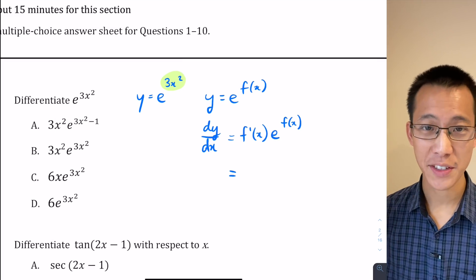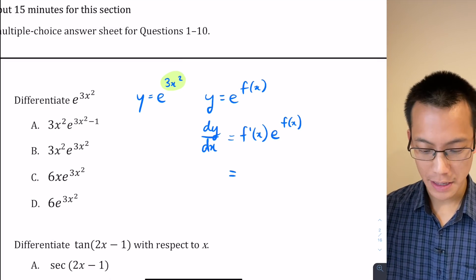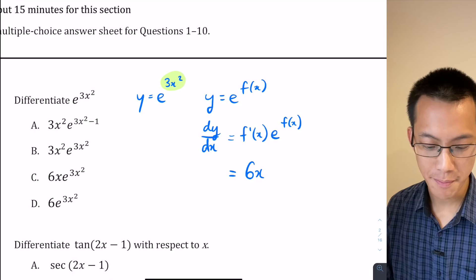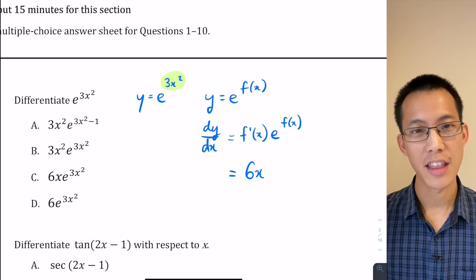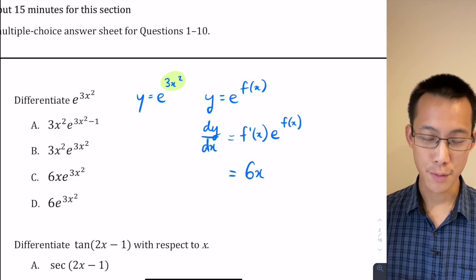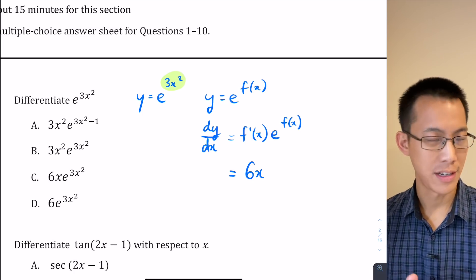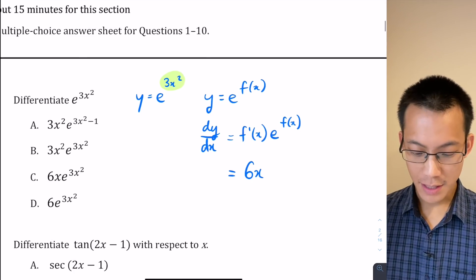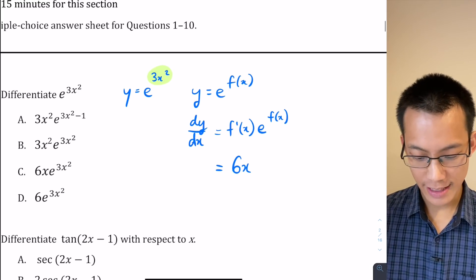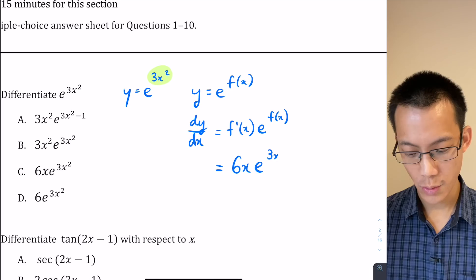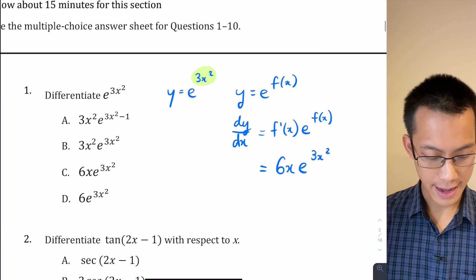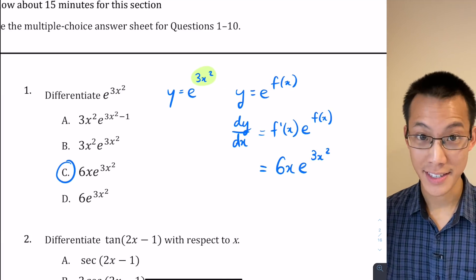In this case, since f(x) is 3x squared, f'(x) will be 6x. I've multiplied by that index the 2; 2 times 3 gives us the 6, and then we reduce the index by 1 from 2 to 1. We of course don't need to write x to the power of 1. So there's my f'(x), and then I get left with e to the power of f(x), which was that 3x squared we saw before, and that lines up with answer C.